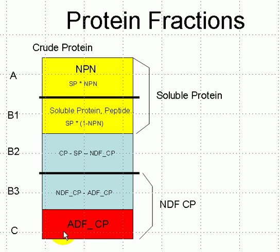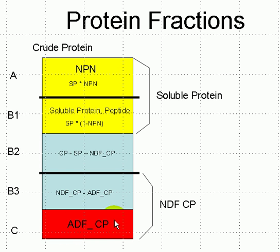The protein that's attached to the acid detergent fiber is very undegradable and is called the C fraction. Another measure that we do in the lab is the NDF crude protein, which includes the ADF crude protein, as well as a slightly more digestible form of protein. The difference between the NDF minus the ADF is what's called the B3 fraction.